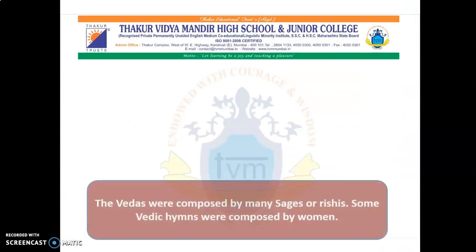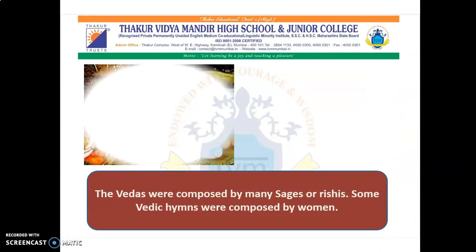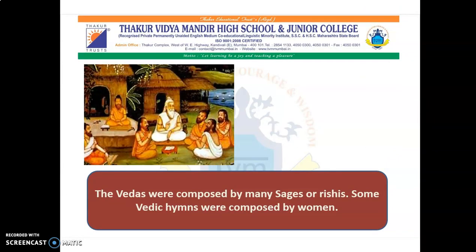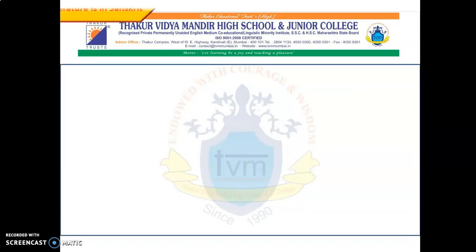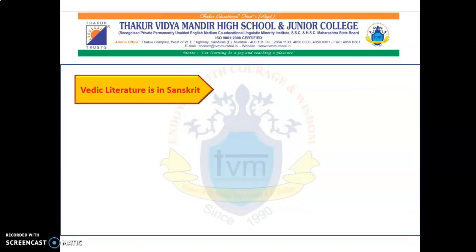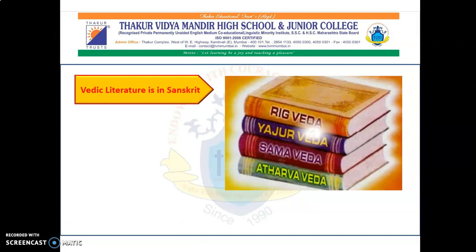These Vedas were composed by many sages or rishis. Some of the Vedic hymns were also composed by women. Hymns are religious songs or poems sung by people to praise God. Vedic literature is in Sanskrit language and there are four Vedas: Rig Veda, Yajur Veda, Samaveda, and Atharvaveda.